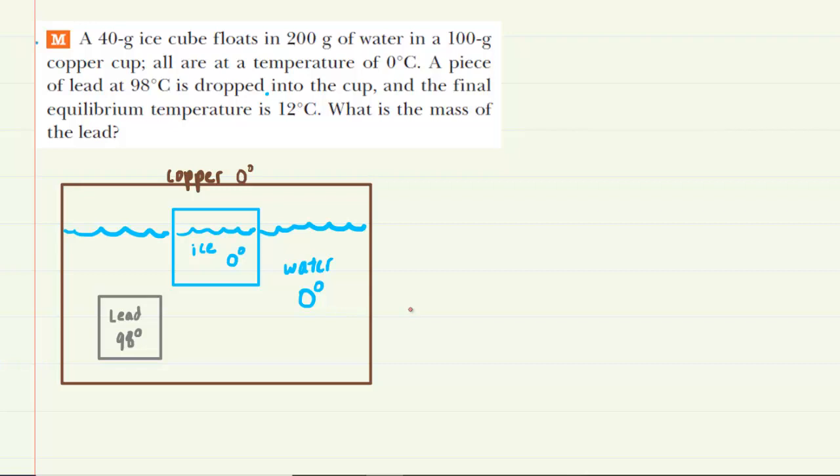The key to understanding this question is to realize that heat energy is going to flow from the warmer object, which in this case is lead, to the cooler objects, which in this case is copper, ice, and water. So we can symbolize that by drawing arrows showing that lead will lose some heat to copper, it will lose some more of its heat to water, and some of its heat to the ice.